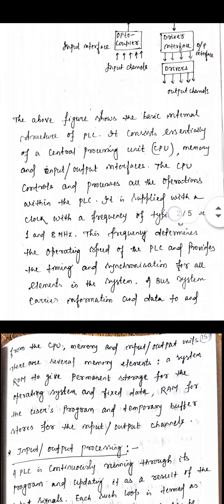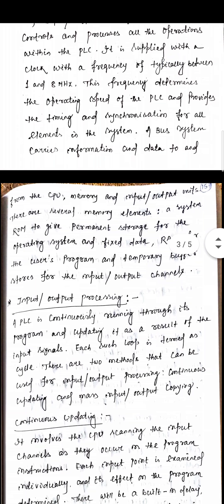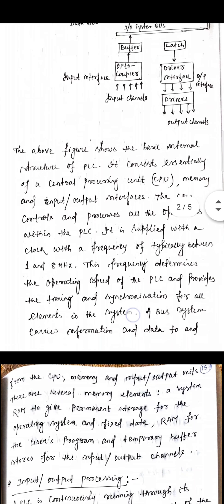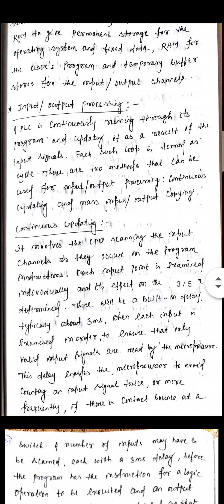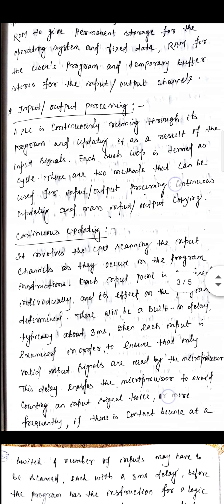There are several memory elements. One is the system ROM, which gives permanent storage for the operating system and fixed data. Another is the user program RAM, which is used for the user program and as a temporary buffer store for the input or output channels.